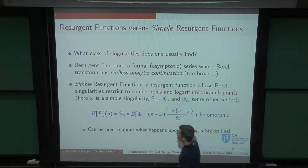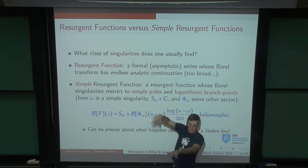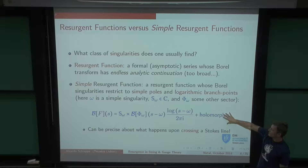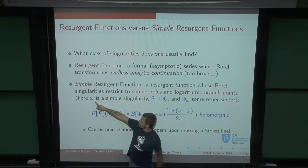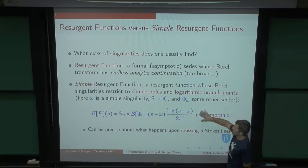We're going to use a simpler definition: the simple resurgence function. These are resurgence functions whose Borel singularities restrict to simple poles — and this is the only time I'm going to mention them, I'm going to forget them straight off because they're always trivial to include — and logarithmic branch points.